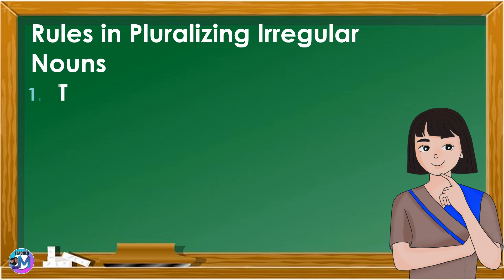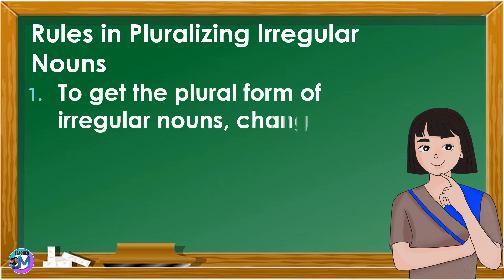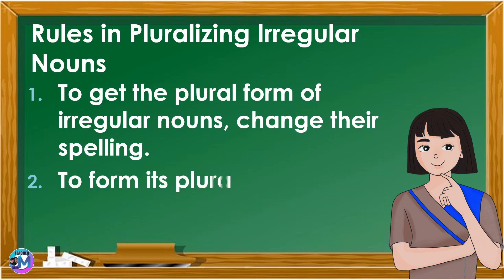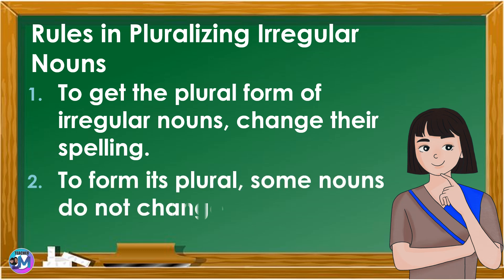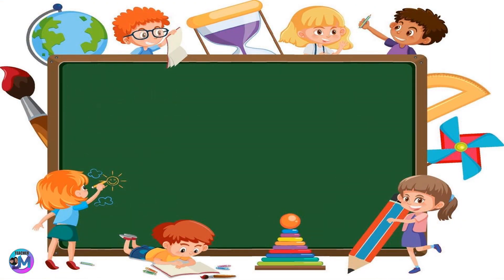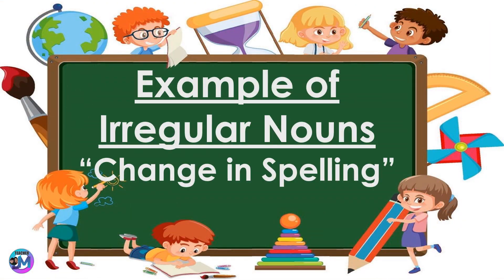First, to get the plural form of irregular nouns, change their spelling. Second, to form its plural, some nouns do not change spelling. Now let's check the examples of irregular nouns with a change in spelling.